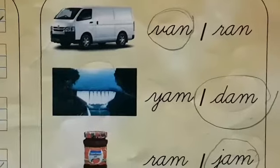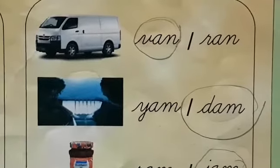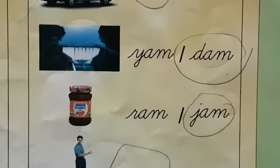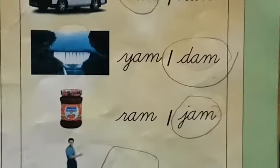Second picture is DAM. They have given two words: Y A M and D A M. So you have to circle D A M, DAM. Third one is JAM. They have given two words: R A M and J A M.